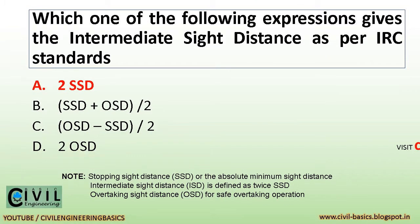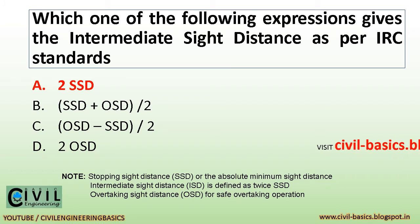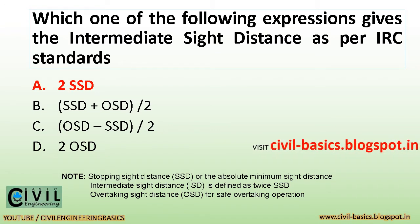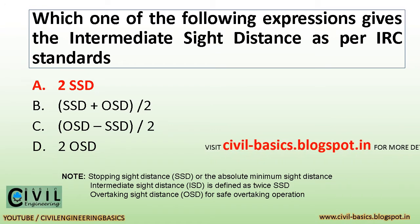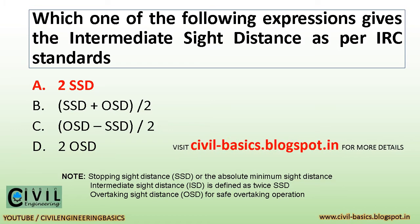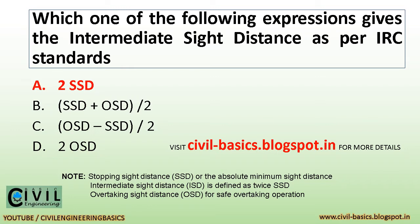Which one of the following expressions gives the intermediate sight distance as per IRC standards? It is 2 times SSD. Stopping sight distance (SSD) is the absolute minimum sight distance. Intermediate sight distance (ISD) is defined as twice SSD. Overtaking sight distance (OSD) is used for safe overtaking operation.